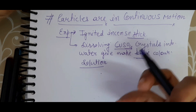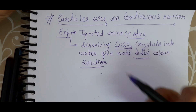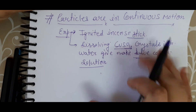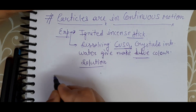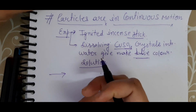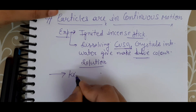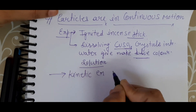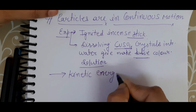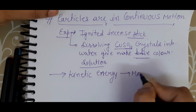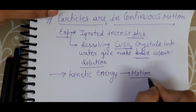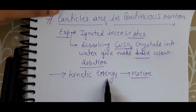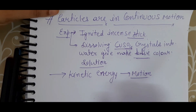Now, why are they in continuous motion? If any particle or object moves, there is energy behind this movement. This energy is called kinetic energy. Kinetic energy is basically energy that is related to motion or movement. Because these particles possess kinetic energy, that is why they are in continuous motion.